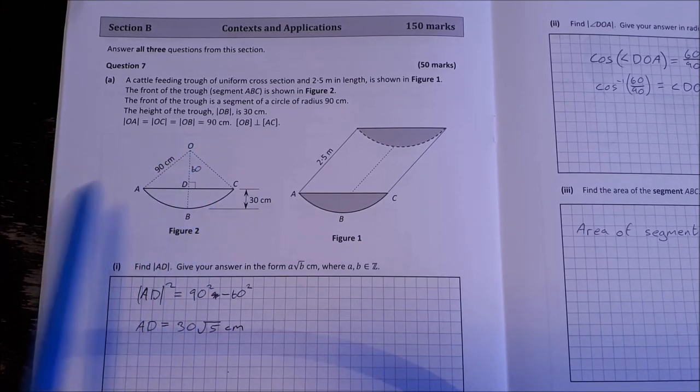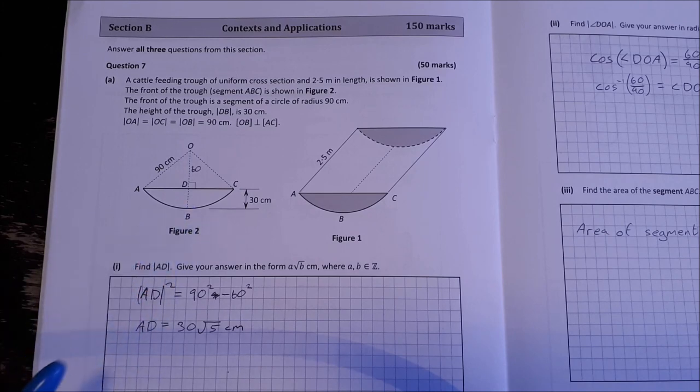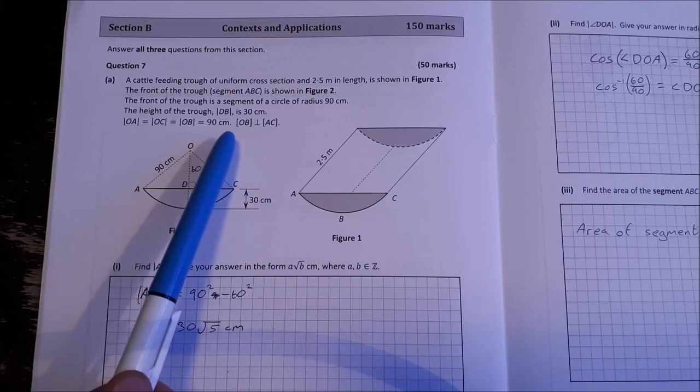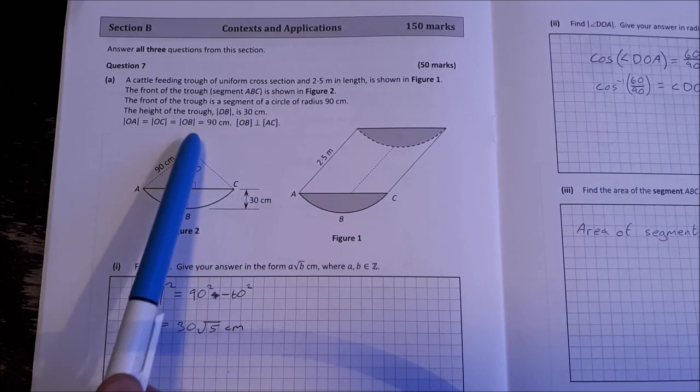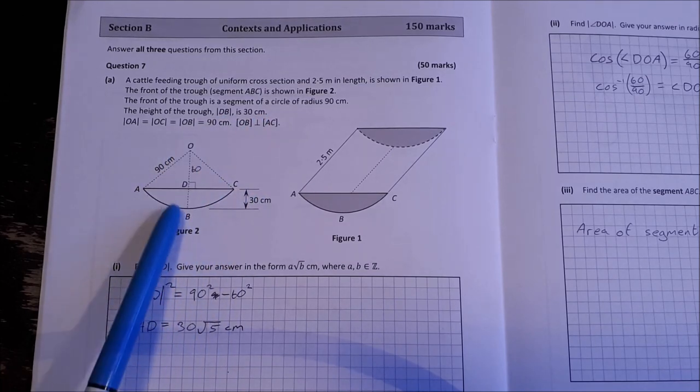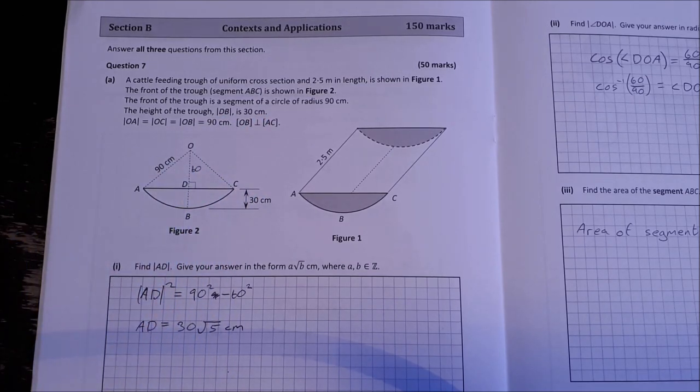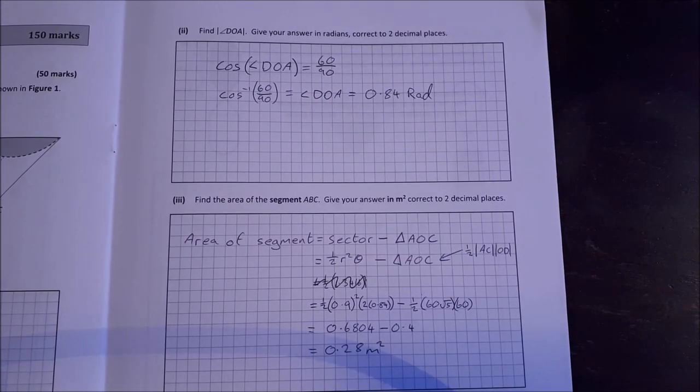So AD squared is equal to 90 squared minus 60 squared. We're given OD in the question there. We're given DB and we're given OB. So we take one from the other. OD is 60. So Pythagoras, AD is 30 root 5 centimeters. Part 2. Find the angle DOA. Give your answer in radians correct to two decimal places.